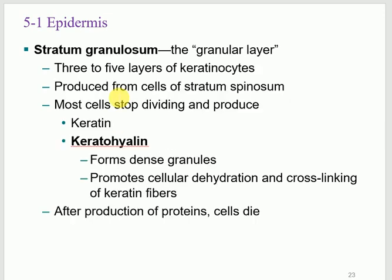The stratum spinosum contains immune response cells called dendritic cells, or Langerhans cells. The next layer is the stratum granulosum, called that because it contains granules — like little bags. These granules contain keratin and keratohyalin. That's what you need to know about granulosum: the granules contain keratin and keratohyalin.